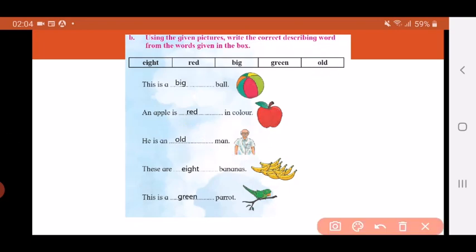Fourth one: These are dash bananas. Now count the number of bananas. Three bananas. How many did you get? Eight. These are eight bananas.